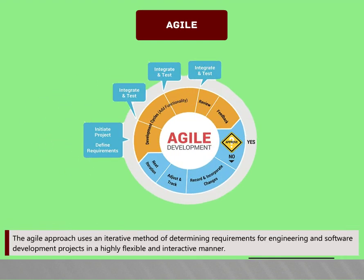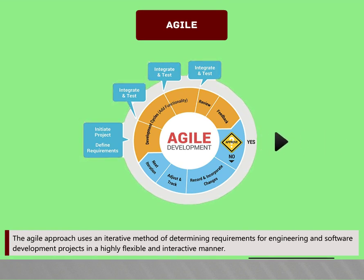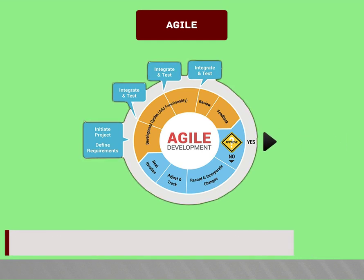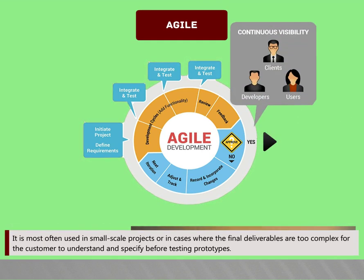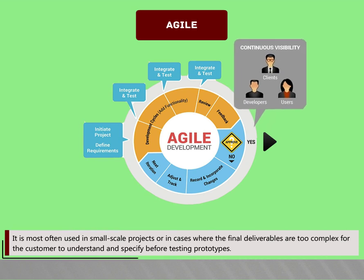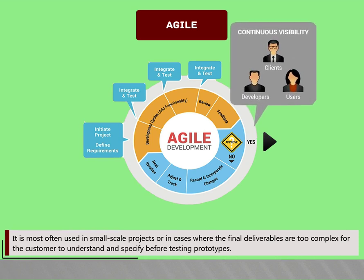The Agile approach uses an iterative method of determining requirements for engineering and software development projects in a highly flexible and interactive manner. It is most often used in small-scale projects or in cases where the final deliverables are too complex for the customer to understand and specify before testing prototypes.